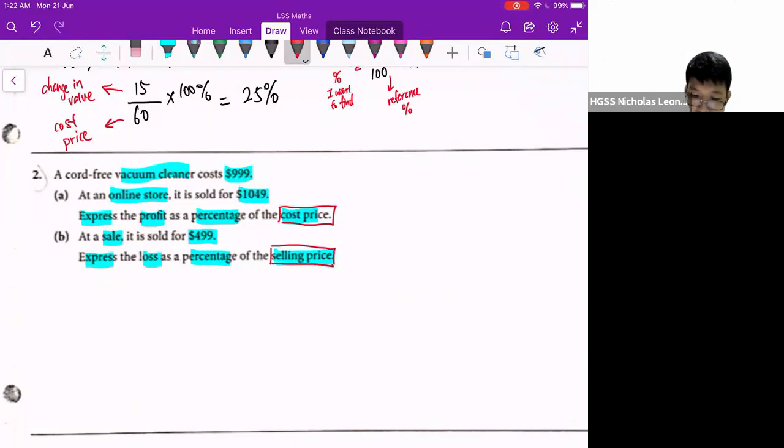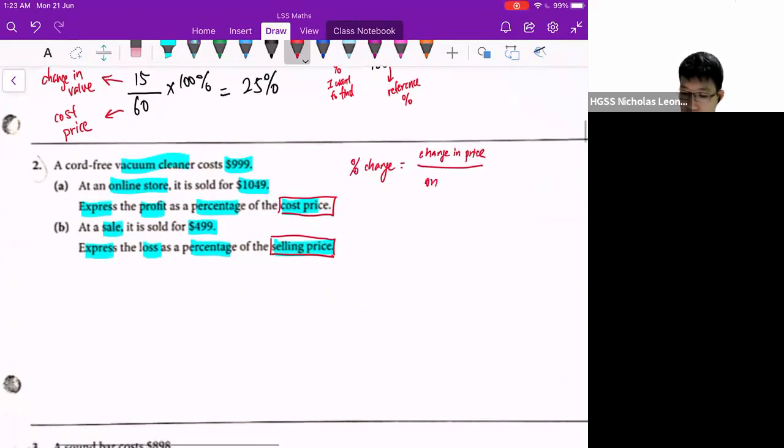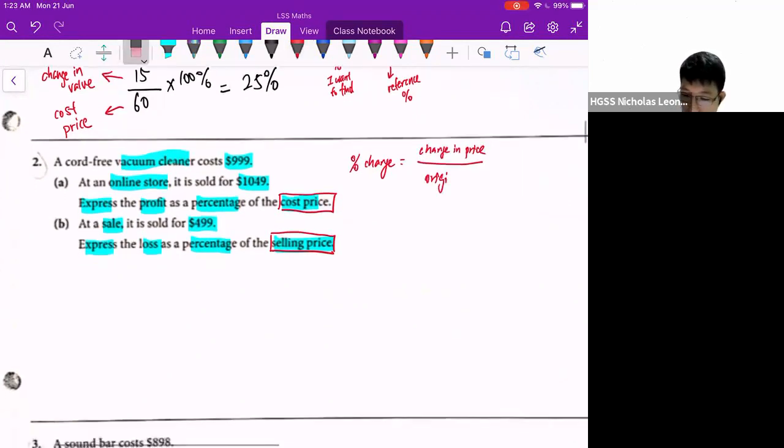So for part A, first thing, we need to find out what is the profit first. Why? Because we need to calculate what is the percentage change. So in this case, we need to find out what is the change in price, which is the increase or decrease over the original price, over the cost price for this case. So in this case, they ask us to reference it to the cost price. So I label it as the cost price. Then we times 100%.